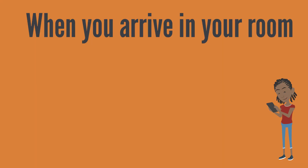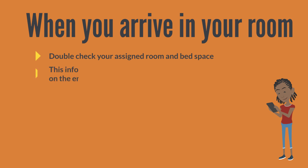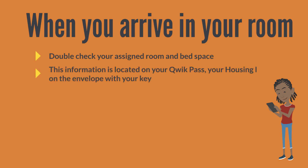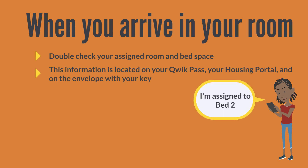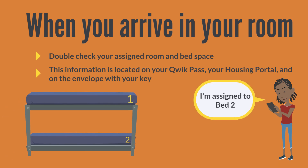When you arrive in your room, make sure to double-check your assigned room and bed space. This information can be found on your QuickPass, your housing portal, and on the envelope with your key. Your QuickPass will show you which bed space you are assigned to.